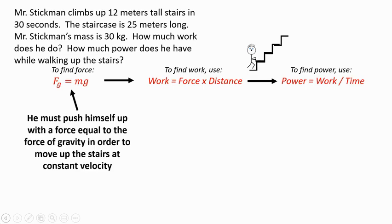So he must push himself up with a force that's equal to gravity. So if he's moving up the stairs at a constant velocity, then the force that he's using to push himself up is balanced with the force of gravity. If it was less than the force of gravity, then he would be accelerating downward and he wouldn't be going up the stairs.